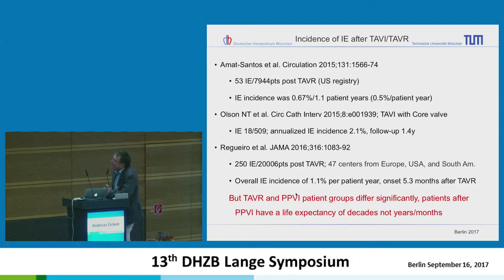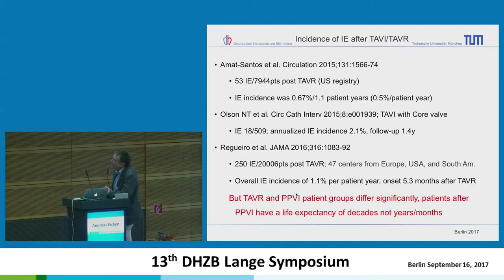What is the incidence of infective endocarditis after TAVI? A US registry reports 1.5% incidence per patient year. A Copenhagen study using only the CoreValve came to 2.1% per patient year. And the largest cohort, from 47 centers in Europe, the US and South America, had an incidence of 1.1% per patient year.